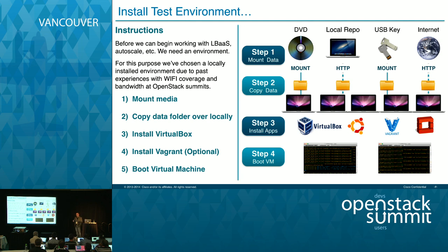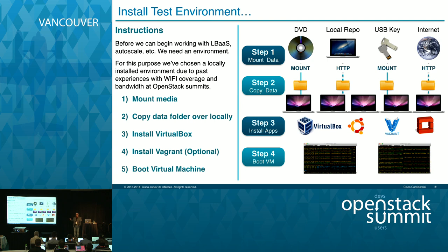The process you saw was used to build the workshop environment. The environment on the DVDs and USB keys is a baked, completed DevStack environment configured and ready for Heat, Ceilometer, auto scale, and LBaaS on top of it. The Vagrant documentation is out there so you can build and test your own environments, but the biggest priority in the next 30 minutes is to get a VirtualBox image running on your machine. By show of hands: who has VirtualBox installed and has an actual environment up and running right now?